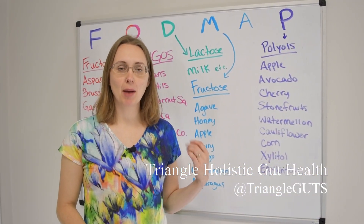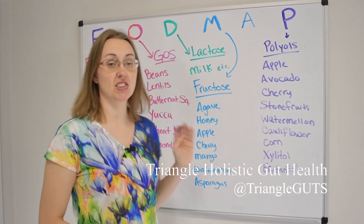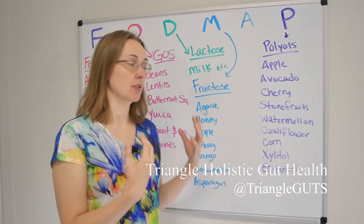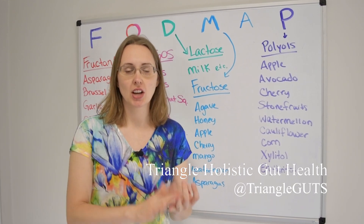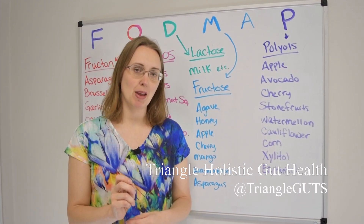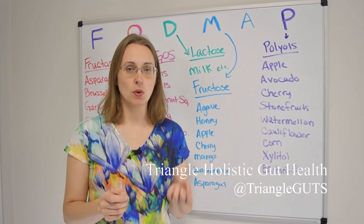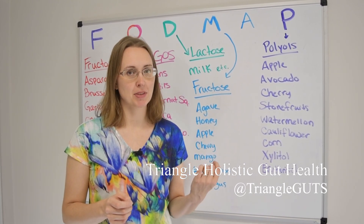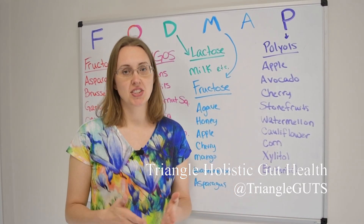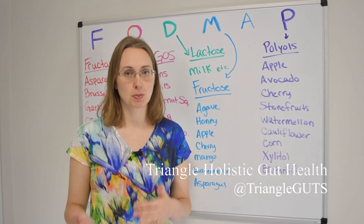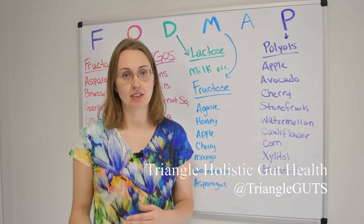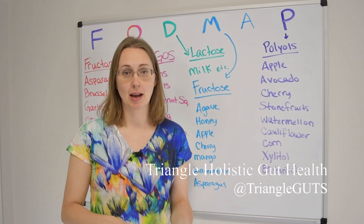Next up, we have the D in FODMAP, which is the disaccharide. Really what we're talking about here is lactose — a two-unit sugar — and that's found in dairy products. So we're thinking about things like milk, custard and pudding, ice cream, yogurt, and frozen yogurt. Some people debate whether kefir is okay if you're lactose intolerant or doing the low FODMAP diet. The apps and lists say kefir is high in lactose and a no-go, but some swear the bacteria in kefir digest some of the lactose, making it more digestible. Let me know your thoughts in the comments.